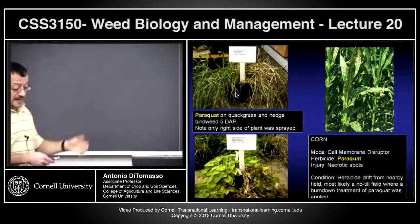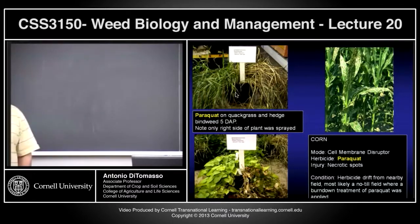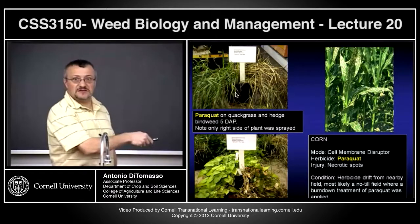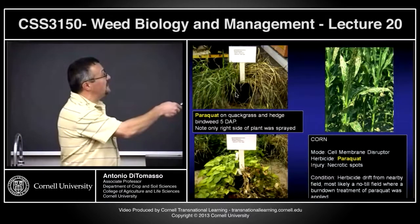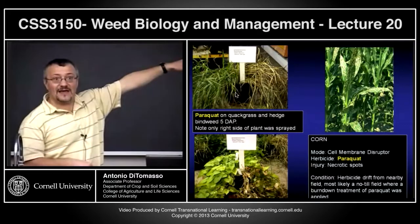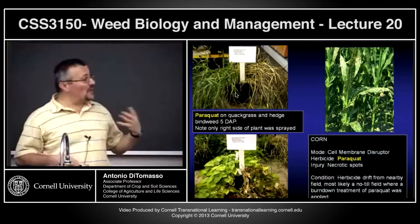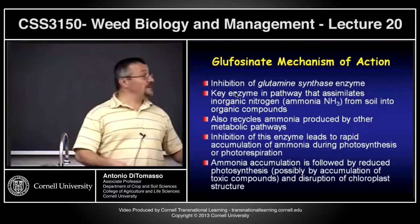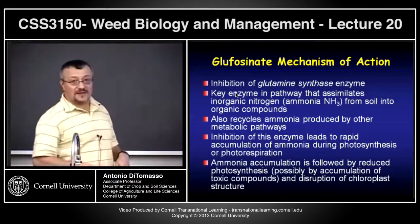Glufosinate mechanism of action — a different beast in a sense — because it affects this enzyme called glutamine synthase. What is this enzyme? It's important in assimilating inorganic nitrogen — basically ammonium, NH3 — from soil into organic compounds. It recycles ammonia. So when this enzyme is inhibited, it leads to rapid accumulation of ammonia. The ammonia is not being converted — not being assimilated into organic compounds — the ammonia backs up, accumulates, and through accumulation of toxic compounds, basically disrupts chloroplast structure.